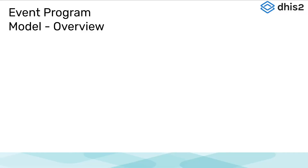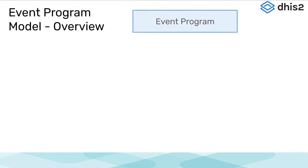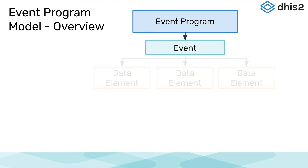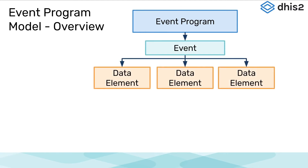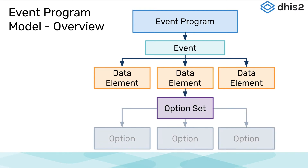Looking at the data model for event programs visually, we can tie the entire model together. We can see that a program is made up of an event. An event contains data elements, and the tracker domain data elements used in programs can be disaggregated by option sets, which are made up of options.